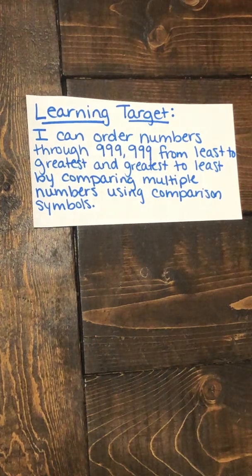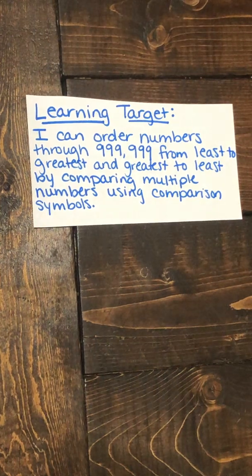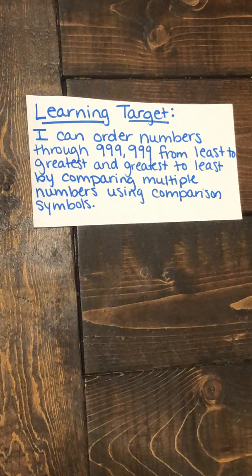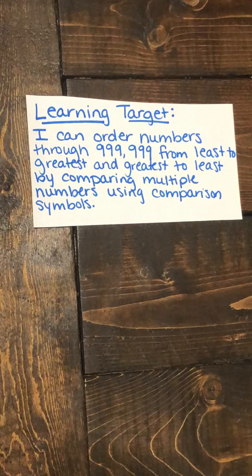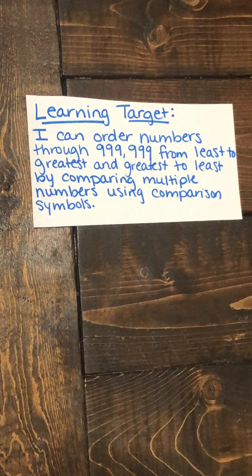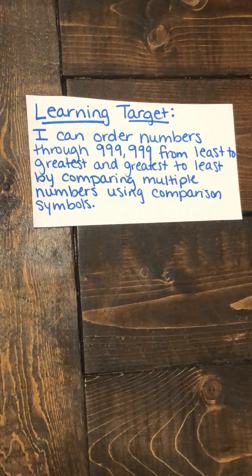Our learning target for today is I can order numbers through 999,999 from least to greatest and greatest to least by comparing multiple numbers using comparison symbols.